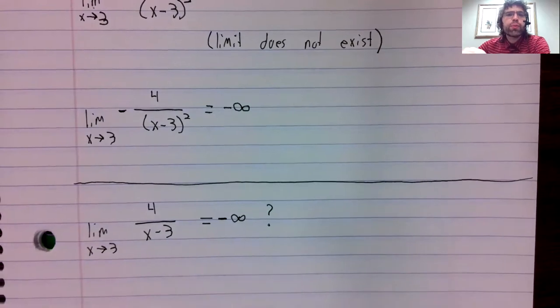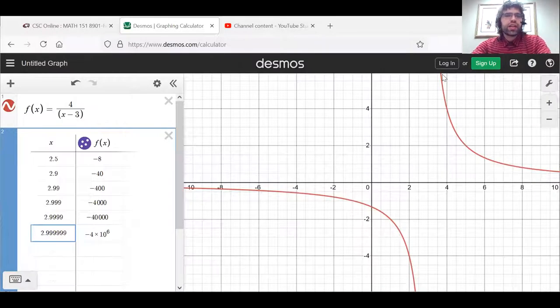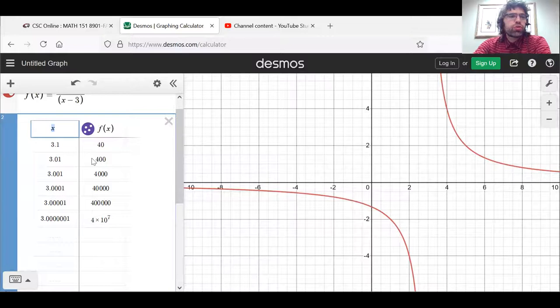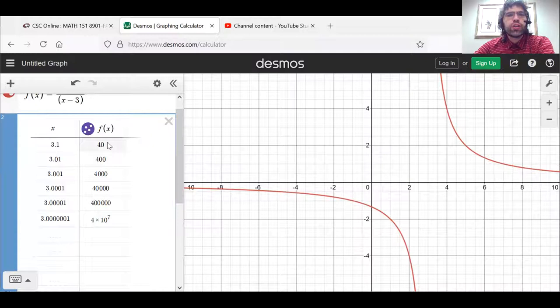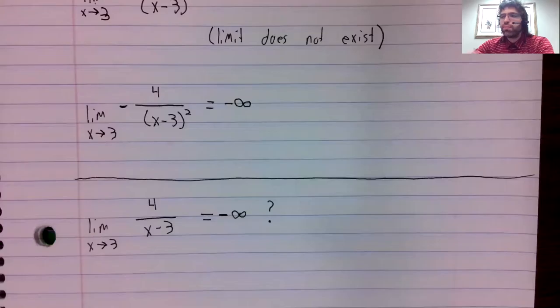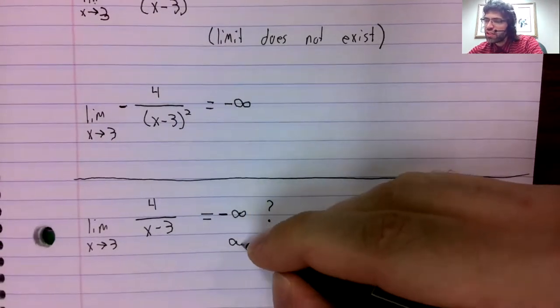However, if we were approaching 3 from the other direction, that is to say, if instead of approaching 3 from the left, we approached 3 from the right, we'd look at f of x and see that it was approaching positive infinity. And we might be tempted to instead of this, write that.